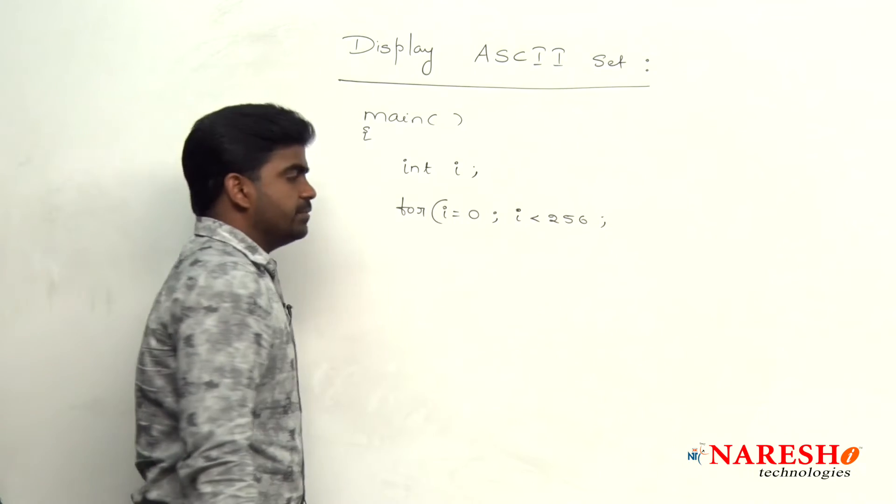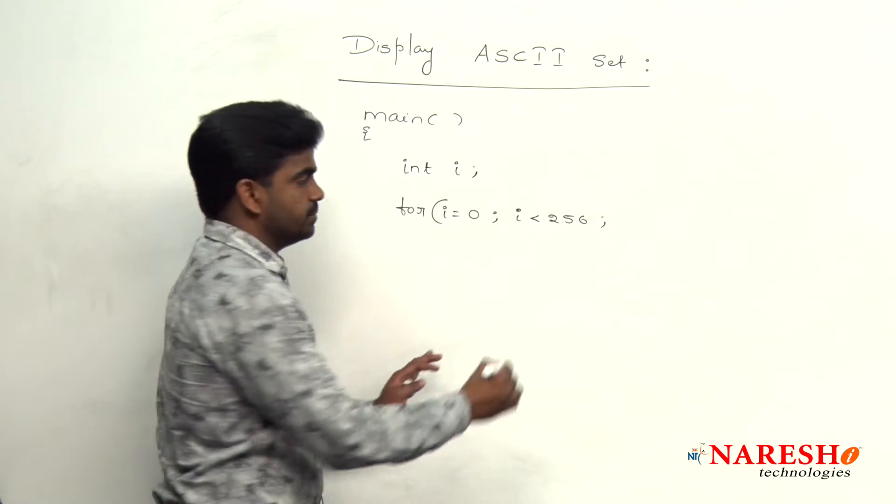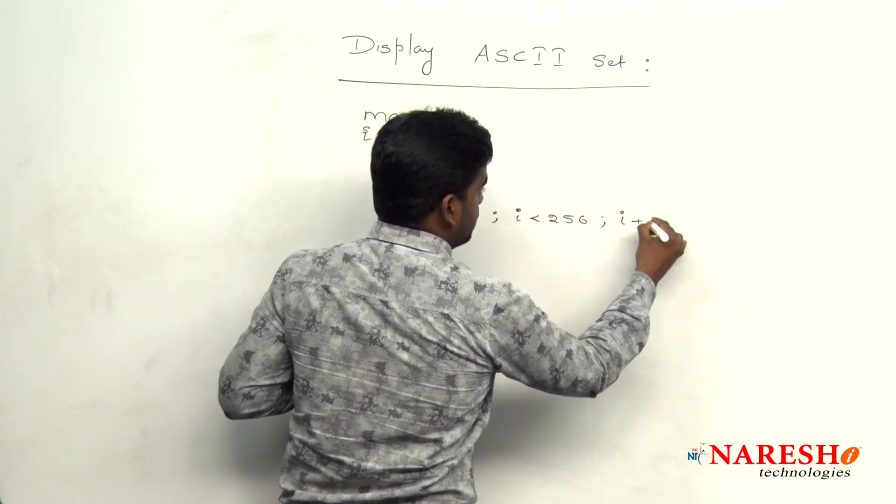So, it will repeat from 0 to 255, increase by 1 every time.